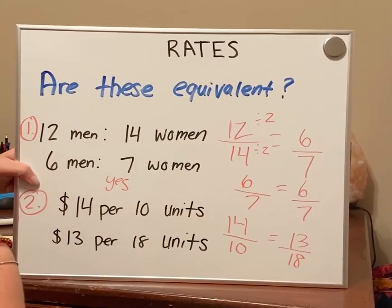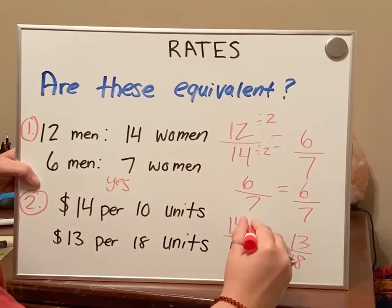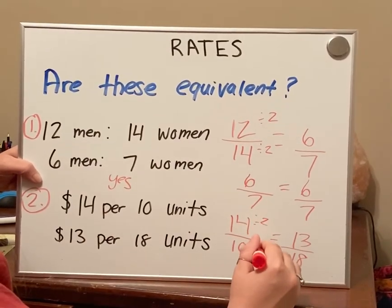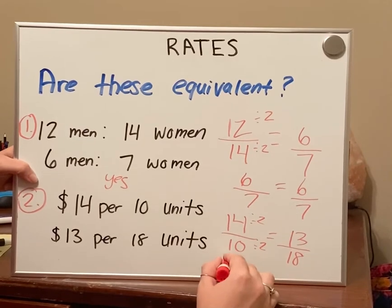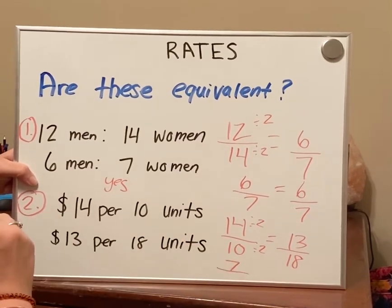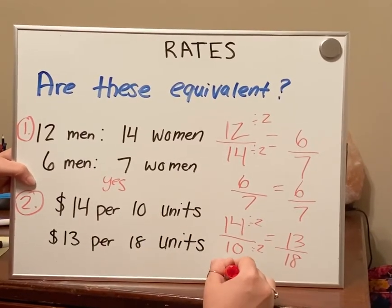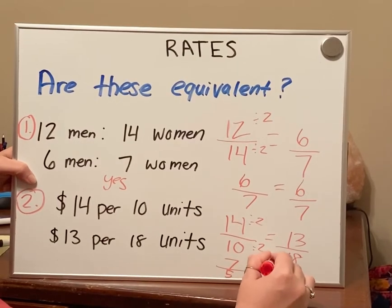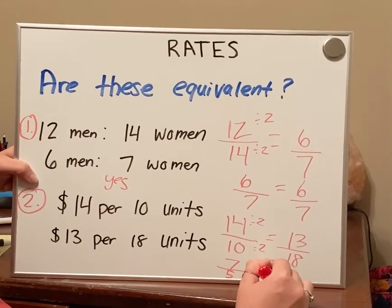I can reduce 14 and 10 also by 2. Well, when I divide 14 by 2, I get 7. When I divide 10 by 2, I get 5. And 13 over 18, that cannot be reduced.